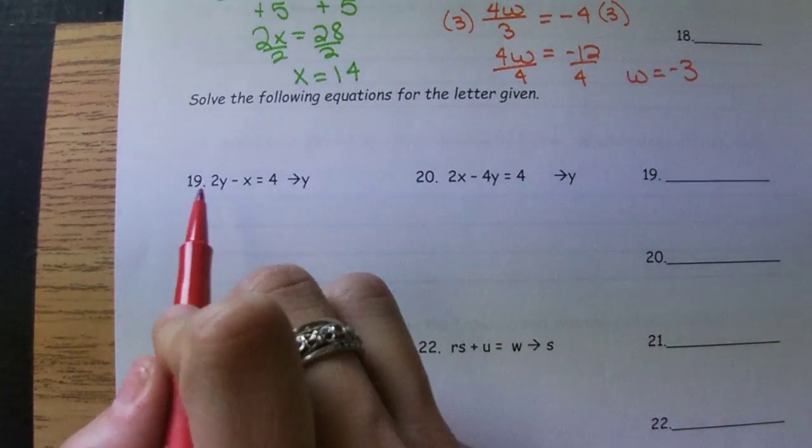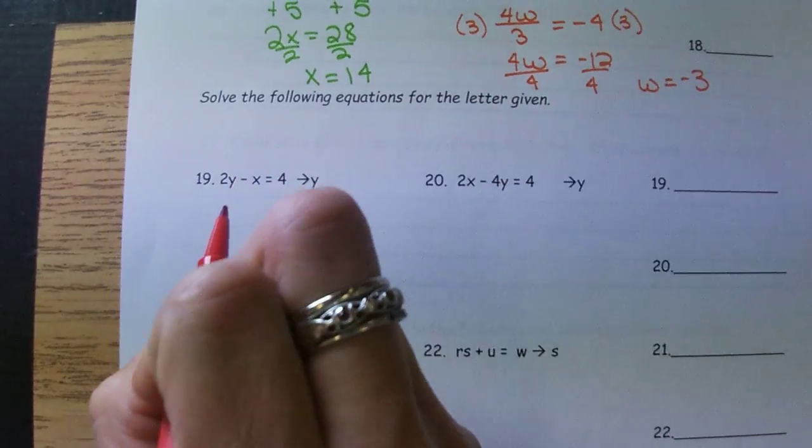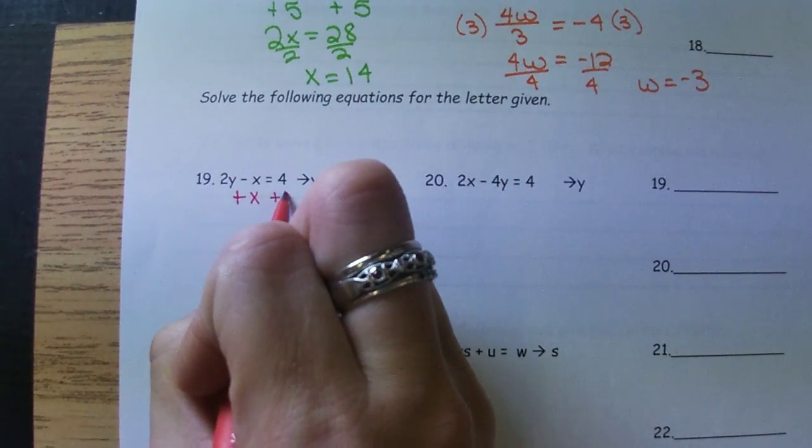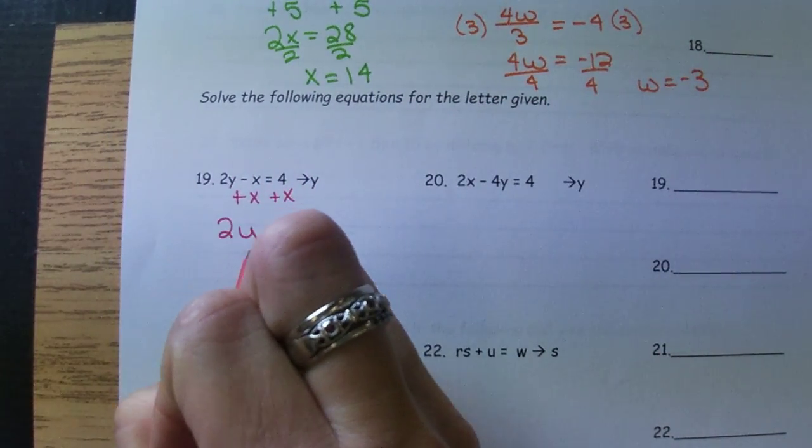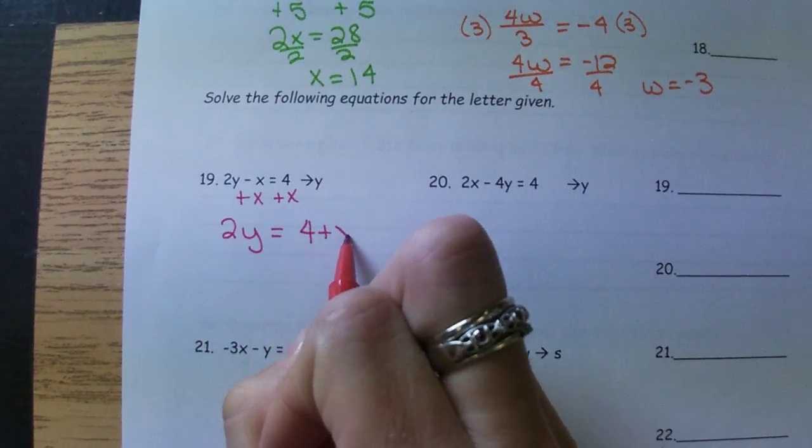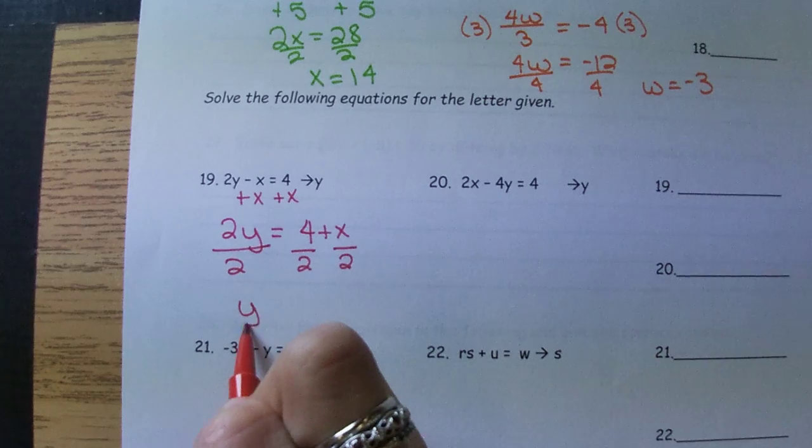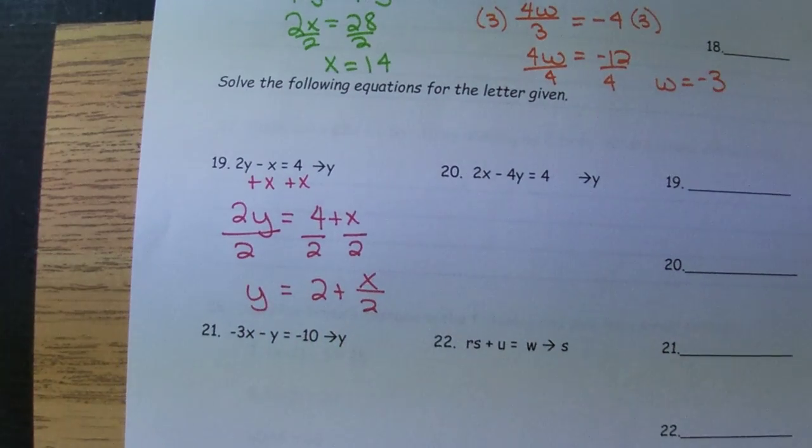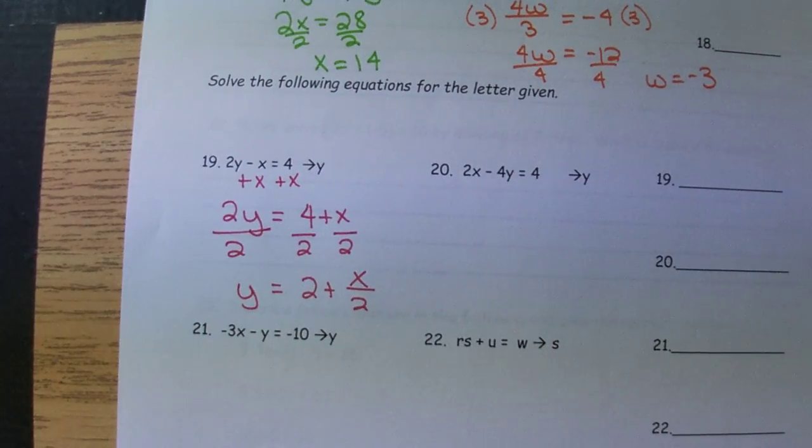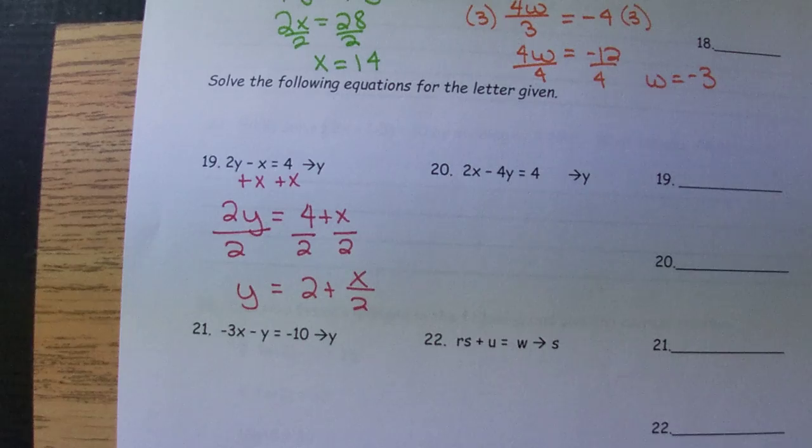Number 19, we're solving for Y, so X and Y are on the same side, so we'll have to move that X over first. So we'll say 2Y equals 4 plus X. So we'll just get Y equals 2 plus X over 2. There are other ways that you could write that. You could have that as a 1 half X plus 2. I'm just looking that you're getting Y by itself.